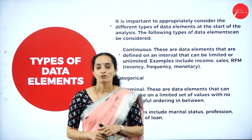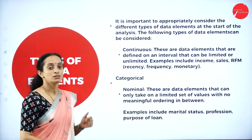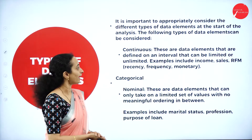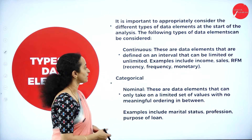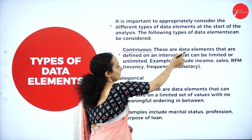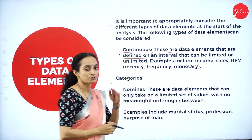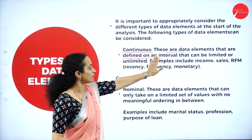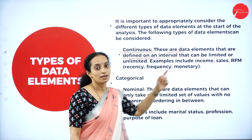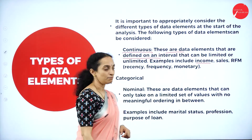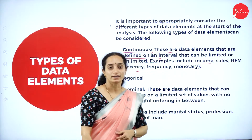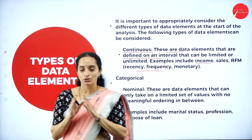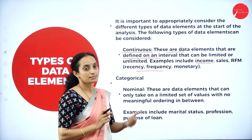Next, we shall move on to the types of data elements. What type of data elements can you consider for pre-processing? It is important to consider different types of data elements at the start of the analysis. One type is continuous — these are data elements defined on an interval that can be limited or unlimited. Examples include income, sales, recency, frequency, and monetary details. They are collected at intervals, may be limited or unlimited, but are continuous — they do not break even with a time gap.